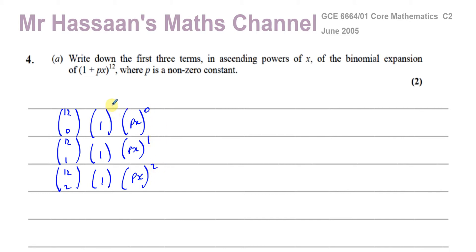And this one starts from the opposite power, which is the highest power, which is 12, 11, and 10. The powers must always add up to this number here, 12. And the number here is always the same as the number on the bottom part of the NCR.